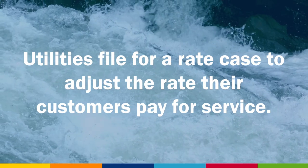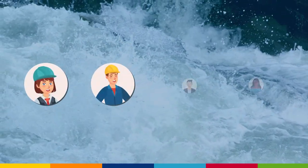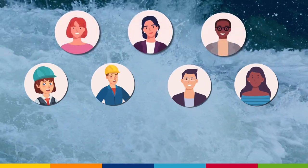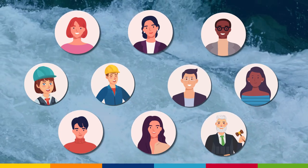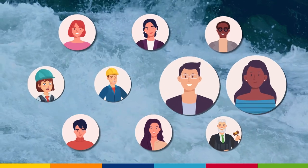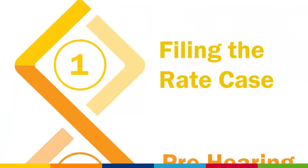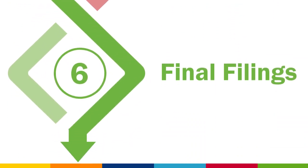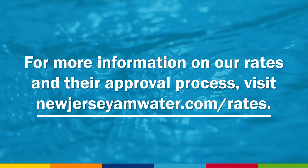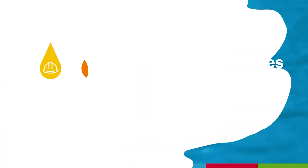To recap, utilities file for a rate case to adjust the rate their customers pay for service. The utility company, the Board of Public Utilities, the Division of Rate Council, the utility's customers, and an administrative law judge are involved throughout the process to ensure rates are just and reasonable. The BPU makes the final decision over any rate changes and when they will go into effect. Every time we adjust our base rates, we undergo this process to ensure that our customers are paying an appropriate price for their service. For more information on our rates and their approval process, visit NewJerseyAMWater.com/rates. Thank you.